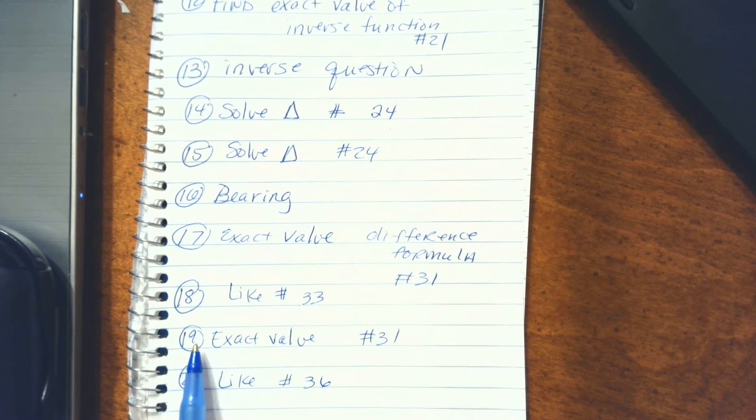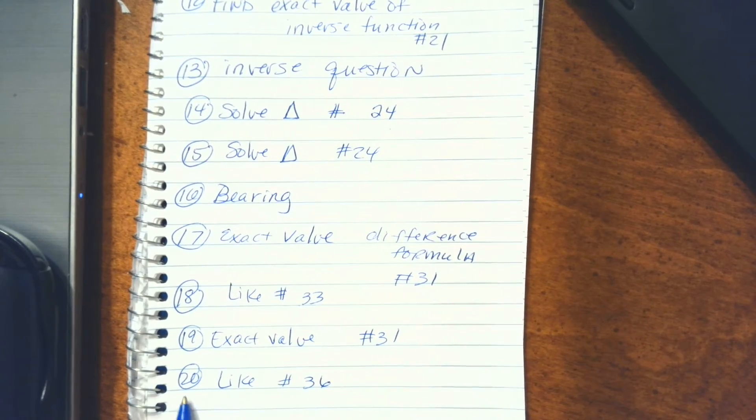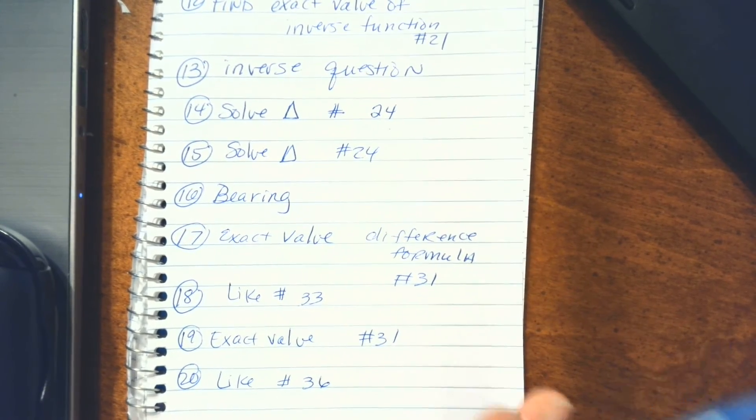Exact value difference formula like number 31. 18 is similar to 33, 19 is similar to 31, and 20 is similar to 36.